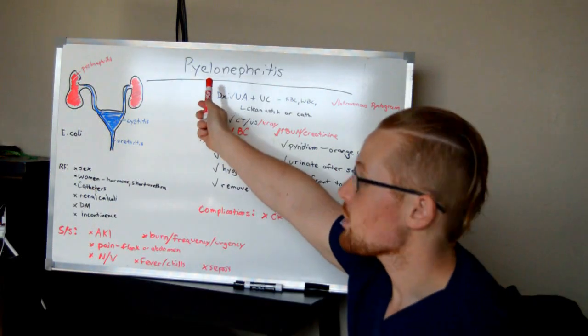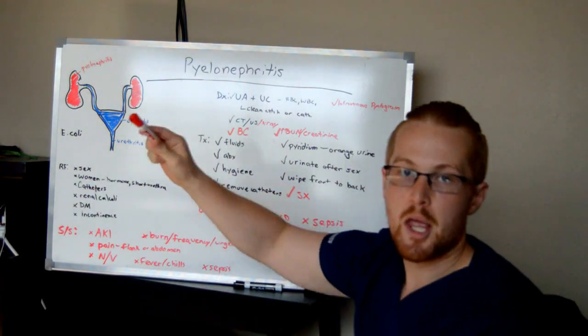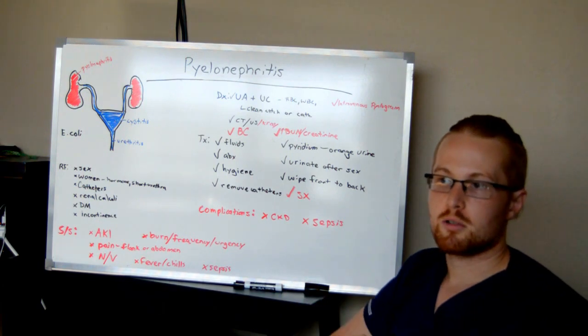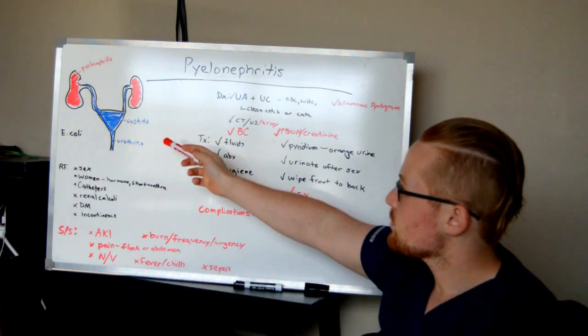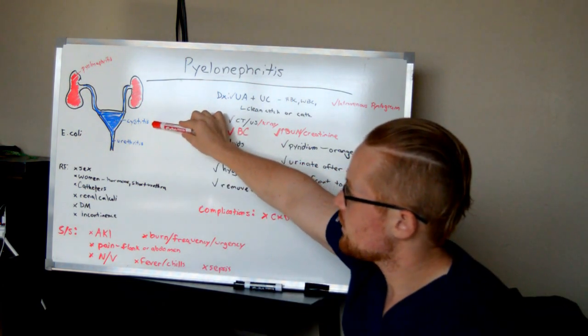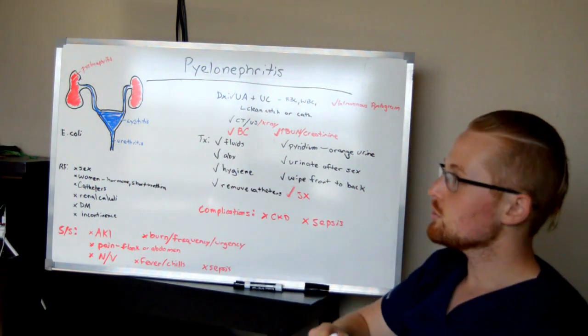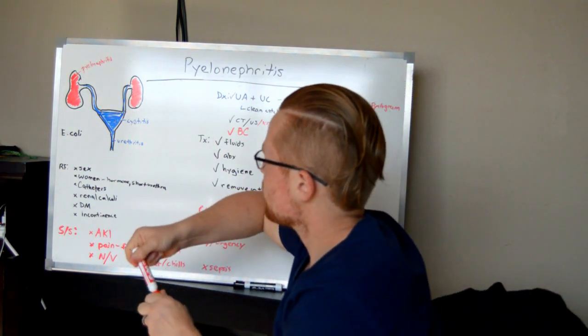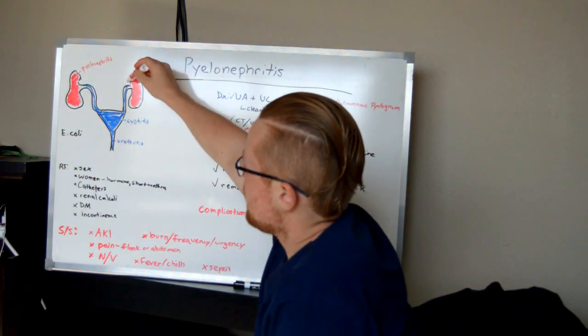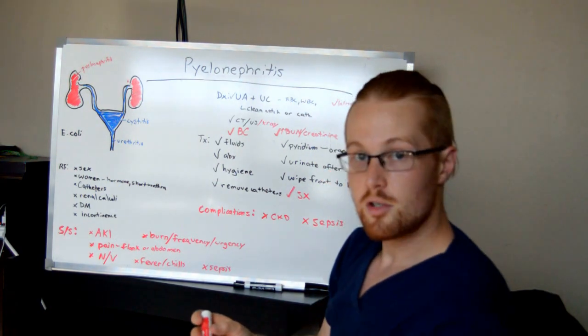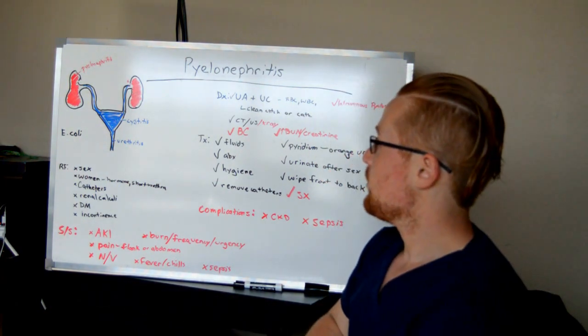Let's talk about pyelonephritis. In my last video, I talked about urinary tract infections as cystitis and urethritis, from the bladder down. Pyelonephritis is where you start having the infection right here at the site of the ureters and the kidney. This is quite a bit more severe.